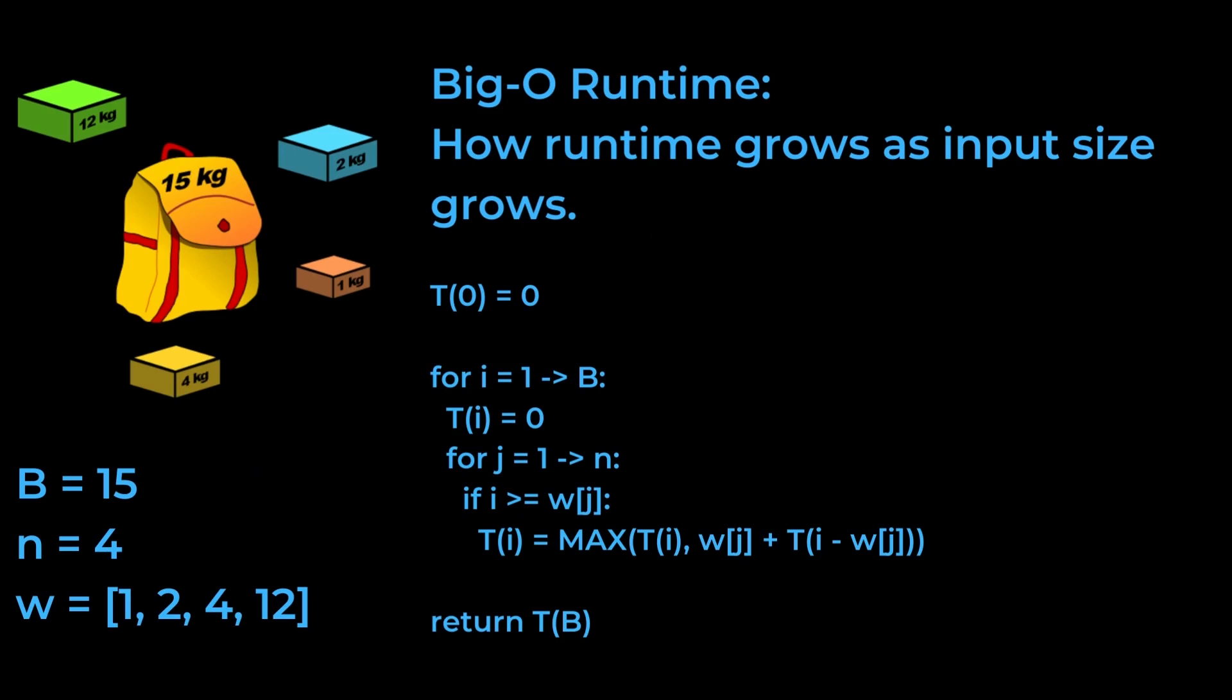The definition of big O runtime is based around how the runtime of our algorithms grow as the size of the input grows, but note that this is the size of the input, not its magnitude. From looking at the pseudocode, it's obvious to see that if we were to increase B from 15 to 30, or double n from 4 to 8, that the algorithm is going to take about twice as long. So let's have a look at how these changes impact on the input size.